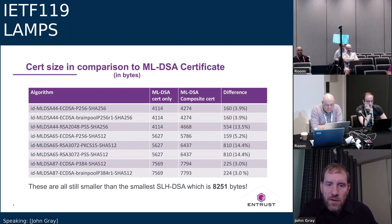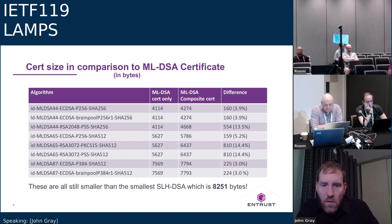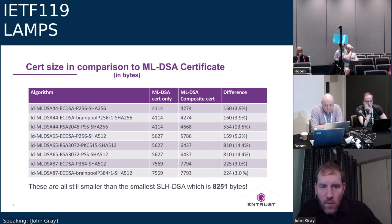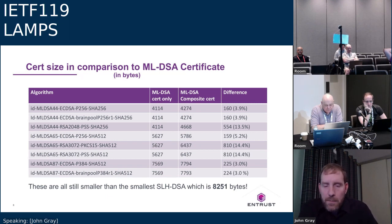The same comparison for a full certificate — using the same template for all. The overhead isn't that much either. A pure ML-DSA certificate versus one with ML-DSA combined with one of the composites — the overhead is small. The key point: even the largest composite certificate is still smaller than SLH-DSA.